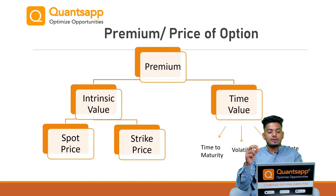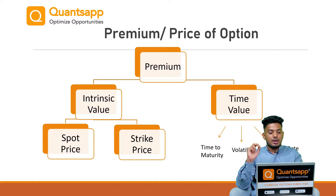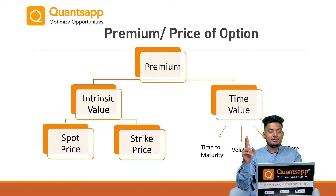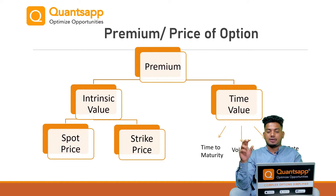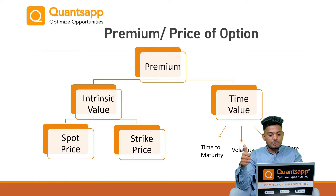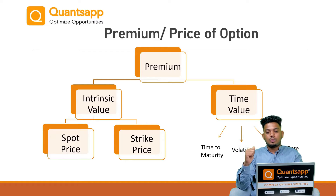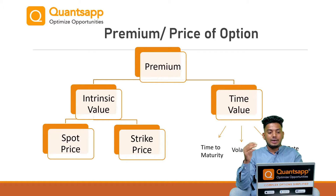Intrinsic value is the value of that option in itself, and it is decided by two simple prices: spot price and strike price. So in intrinsic value, there are only two components — spot price and strike price.